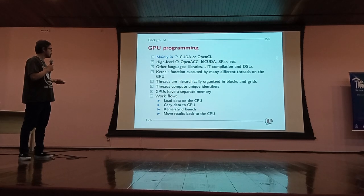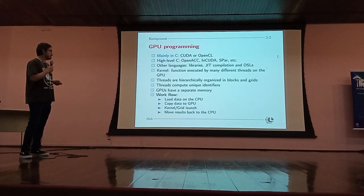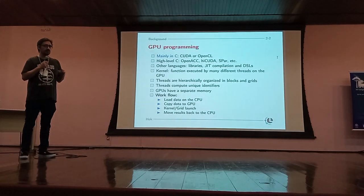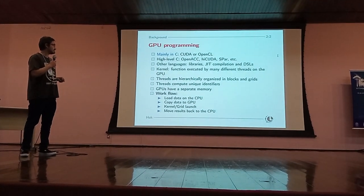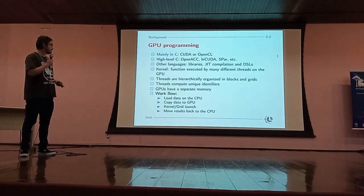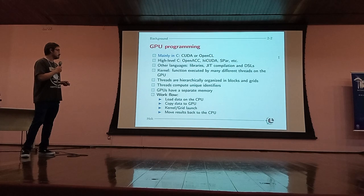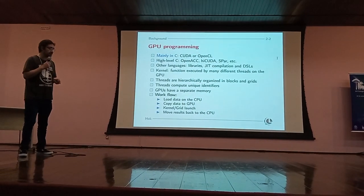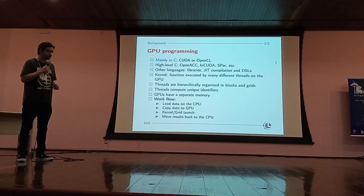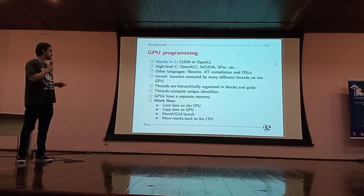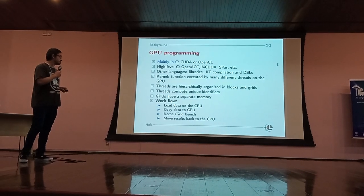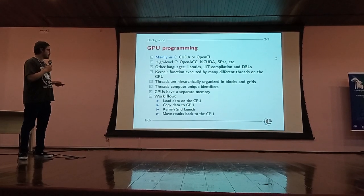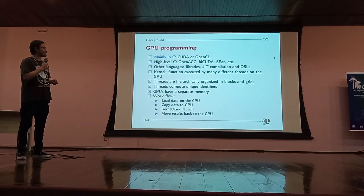For background on GPU programming: it is mainly done in C using CUDA or OpenCL, which are low-level languages. There are also some high-level extensions for GPU programming in C, like OpenACC, HiCuda, and SPAR. For other languages, GPUs are programmed using libraries, just-in-time compilation, and DSLs. In the majority of languages, the kernel is the main abstraction — a function executed by many different threads running on the GPU. Threads are hierarchically organized in blocks and grids.